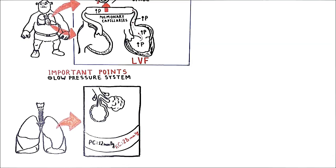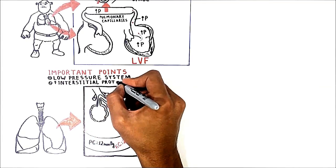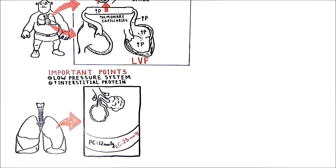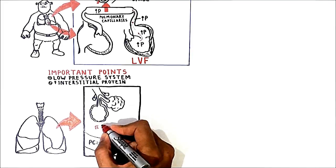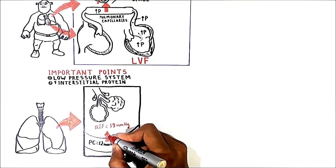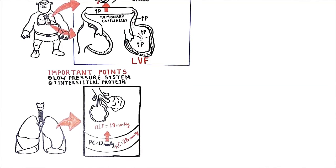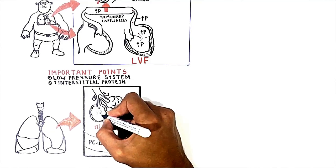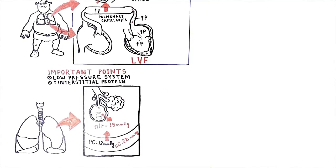Considering these two forces, there should not be filtration because capillary oncotic pressure is greater than hydrostatic pressure. However, we do have filtration in pulmonary capillaries. This is because there is a high concentration of protein in the interstitium — the second difference between pulmonary and systemic circulation. This high concentration of interstitial protein creates a very high interstitial oncotic pressure of approximately 19 mmHg, which is the force that promotes filtration. Additionally, this high oncotic force in the interstitium pulls fluid in from the alveoli and keeps the alveoli dry.